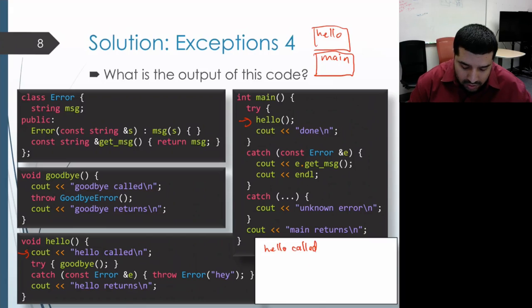And then it enters a try block and makes a call to the goodbye function. So we get an activation record for goodbye on our call stack. And the body of goodbye then begins to execute. So that prints out goodbye called.